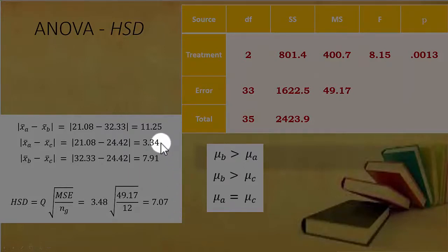For the next one, 3.34 is not greater than 7.07, therefore we conclude that there may not be a difference between those two population means, so mu A could equal mu C.